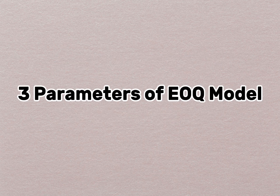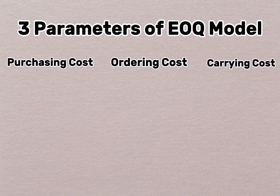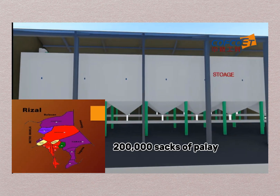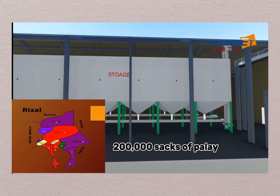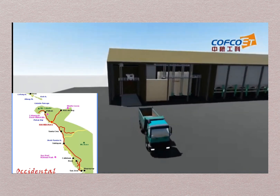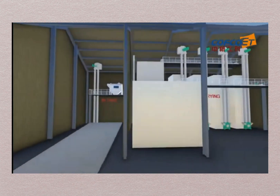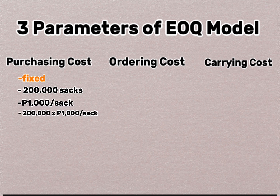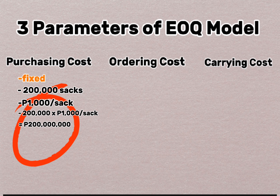There are three parameters of EOQ model: purchasing costs, ordering costs, and carrying costs. In purchasing costs, we assume that the price of the unit is fixed. For example, you have a business in Rizal and you need 200,000 sacks of palay in a year in order to produce milled rice to be sold in the market. You want to get your order from Occidental Mindoro. Let's say each sack of palay costs 1,000 pesos. So 200,000 sacks times 1,000 pesos equals 200,000,000 pesos.